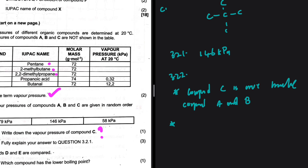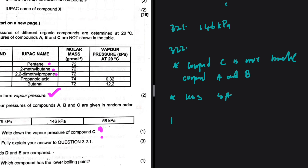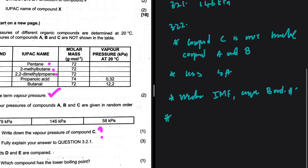What is the consequence of being more branched? The more branched the compound, the less surface area it has — that is the second point. If it has less surface area, it has weaker intermolecular forces compared to B and A. Weaker intermolecular forces means a lower boiling point and melting point, but a higher vapor pressure.